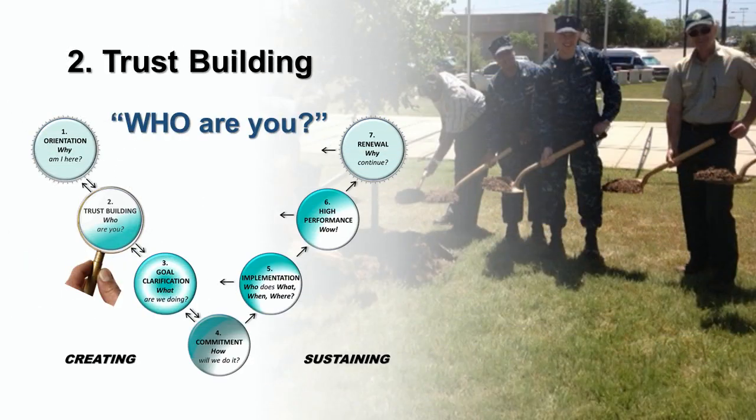Step 2: Trust Building. After the first step, people want to know who they will work with. Trust Building helps team members share information freely about what they intend, what they can or can't do, and what they need from others. The interdependency of two or more people trusting one another is an integral part of a team's ability to succeed.